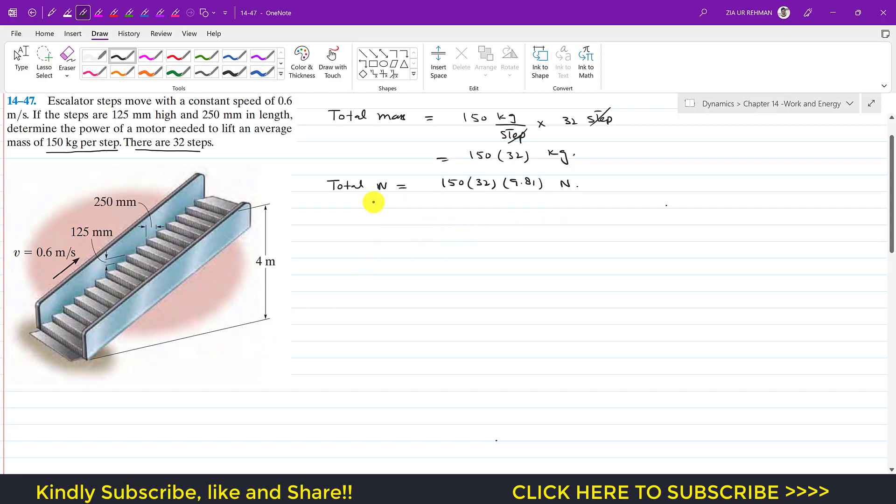We can say that the force of the motor must be approximately equal to the weight, or it should be greater than the weight, but it cannot be lesser than the average weight that it needs to carry. So we can say that this is 150 into 32 into 9.81.